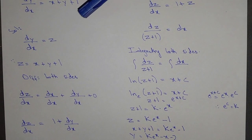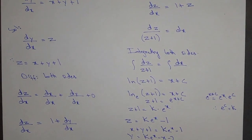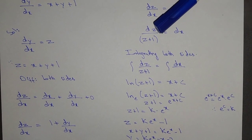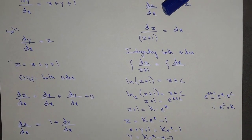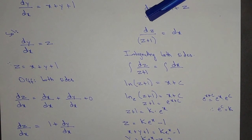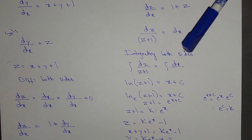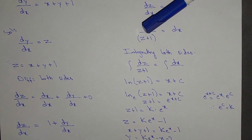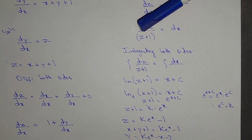So we have dz/dx equal to 1 plus z, because z equals dy/dx. Now dz over (z plus 1) equal to dx — we are just reshuffling the values — so integrating this on both sides.